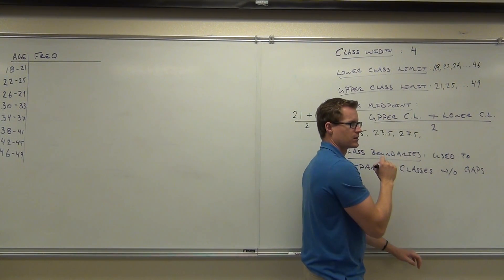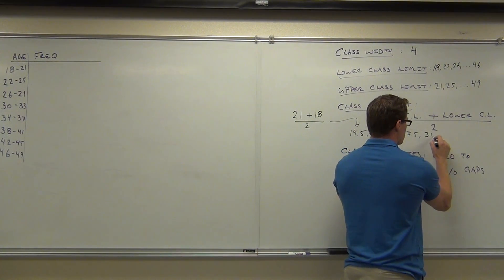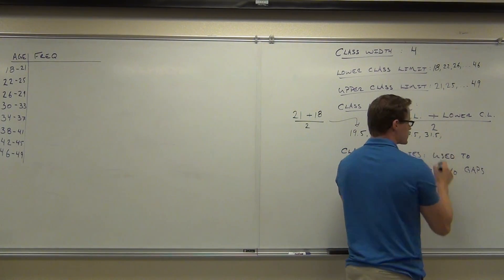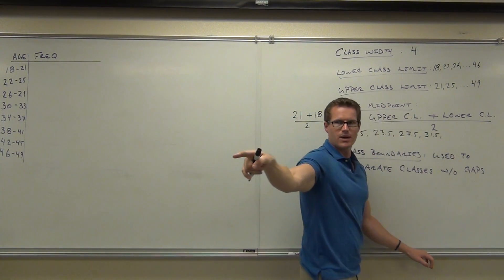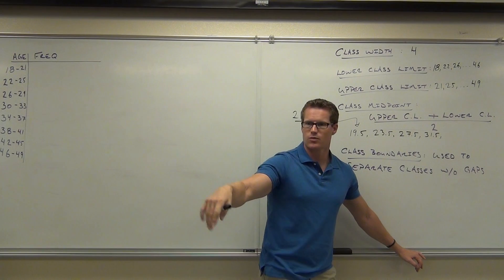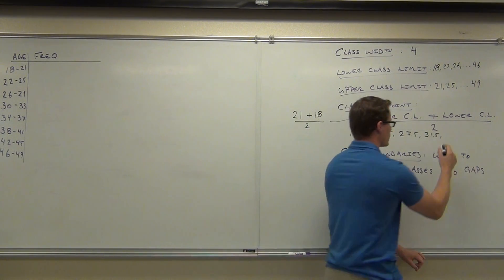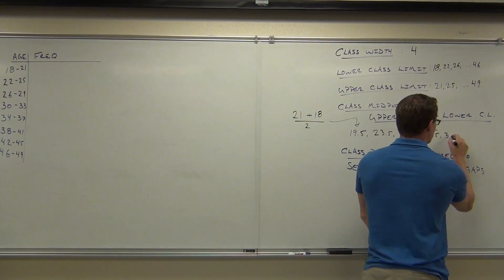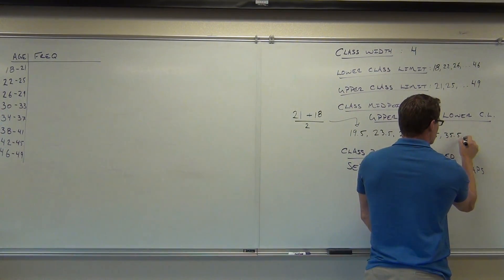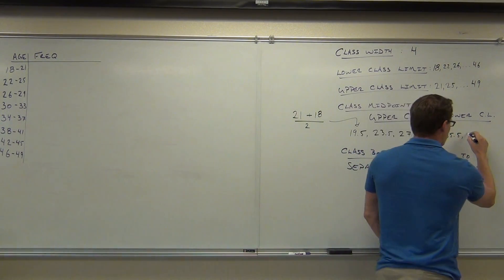How about the next midpoint? 31.5. So on the right-hand side of the room, how about the next midpoint? Next midpoint. Perfect. How many midpoints are we going to have? 39. We'll have 39.5.